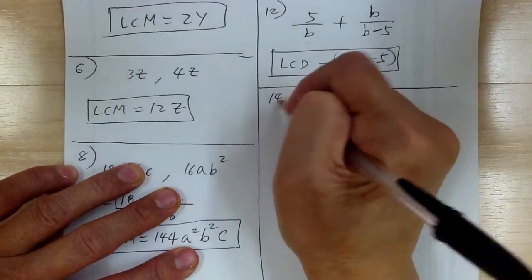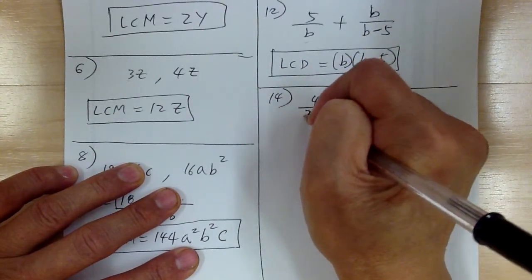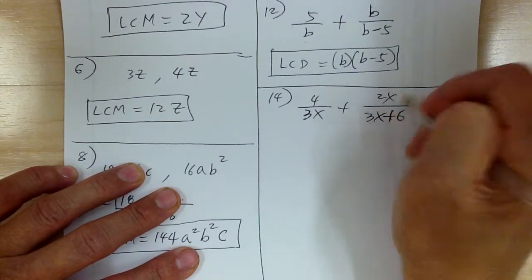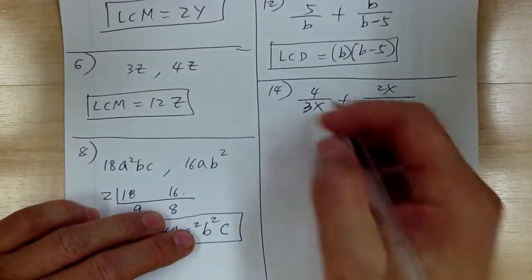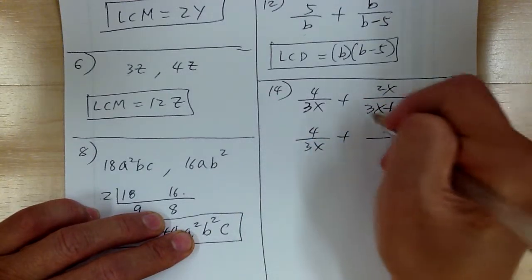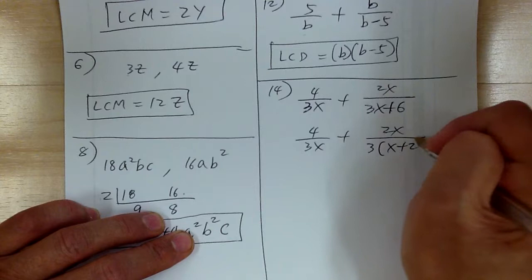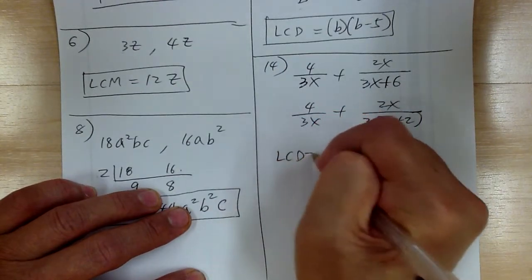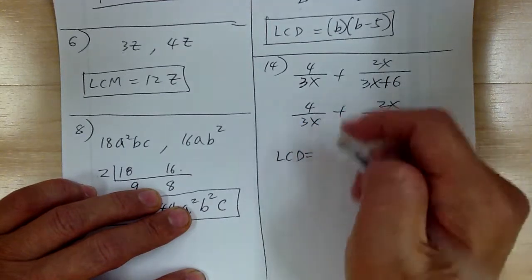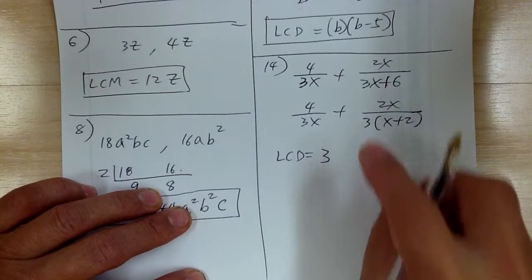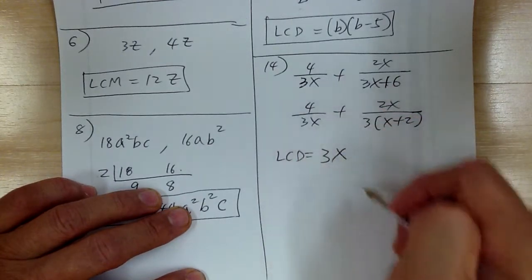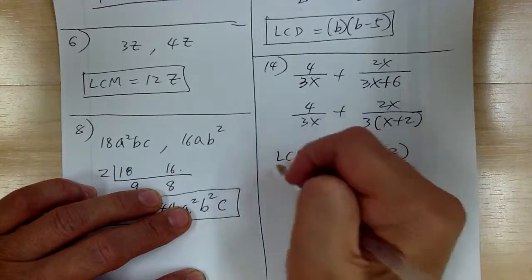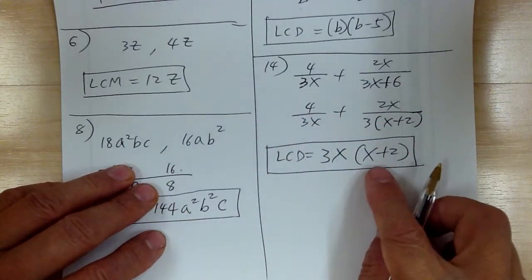Let's go to number 14. You have 4 over 3x plus 2x over 3x plus 6. As soon as you see addition or subtraction, you have to think about factoring. So factor the denominator: you can factor out a 3, which would give x plus 2. So your LCD: the number is 3 (LCD of 3 and 3 is 3), the alphabet is x, and the group is x plus 2 — they are not the same. So your LCD would be 3x times (x plus 2).